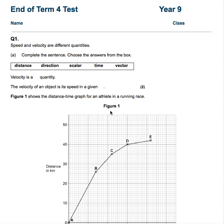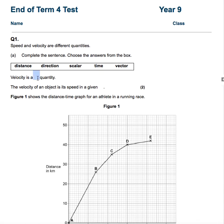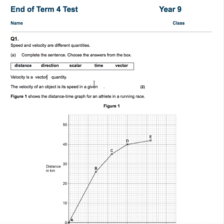Question 1. Speed and velocity are different quantities. Complete the sentence. Velocity is a vector. You need to just know that. And velocity is speed in a given direction. One mark for each of those.